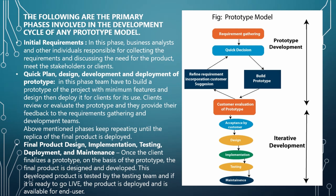The above-mentioned phases keep repeating until a replica of the final product is deployed. This is the most important part of the prototype model — we create a prototype with minimum features and design to ensure that the client will be satisfied with the final product. After the client reviews it, they can ask for changes. The team fixes those changes and sends it back to the client for confirmation. This keeps repeating until the client is satisfied with the prototype.